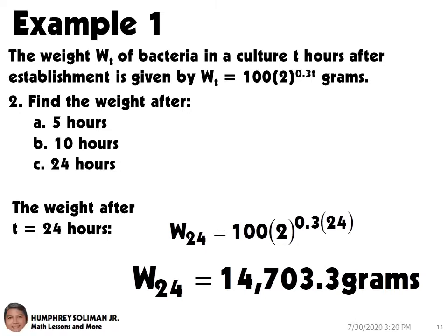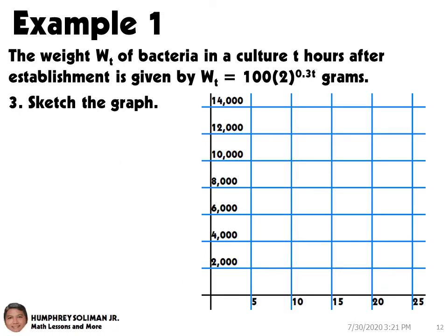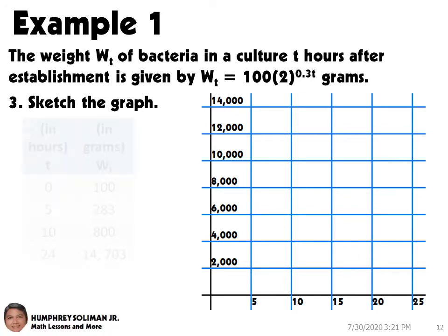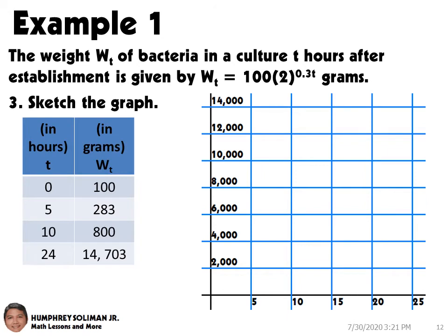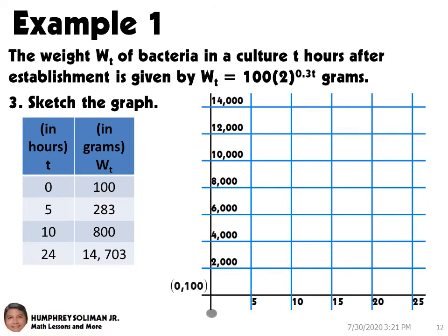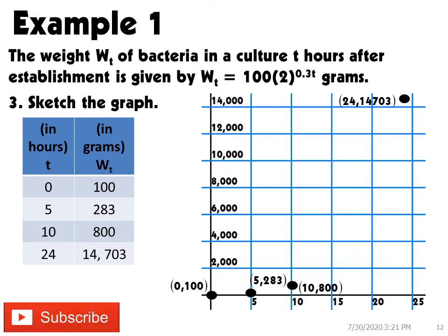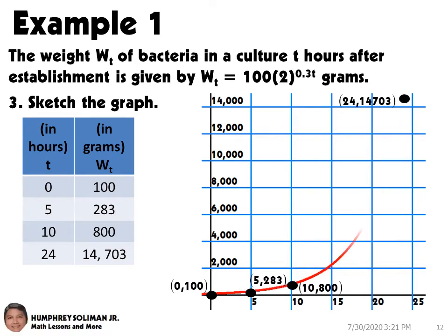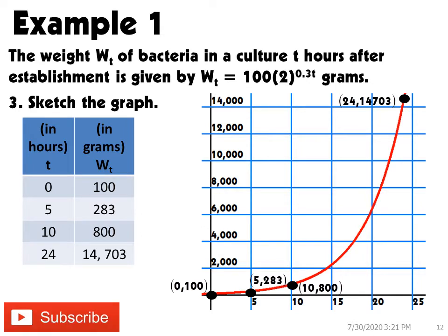Next, in number 3, sketching the graph of the exponential growth of the bacteria, we will use the ordered pairs we got from numbers 1 and 2. We can plot the points of the ordered pairs (0, 100), (5, 283), (10, 800), and (24, 14703), and then connect these points using a smooth curve. This is now the graph of the exponential growth of the bacteria.